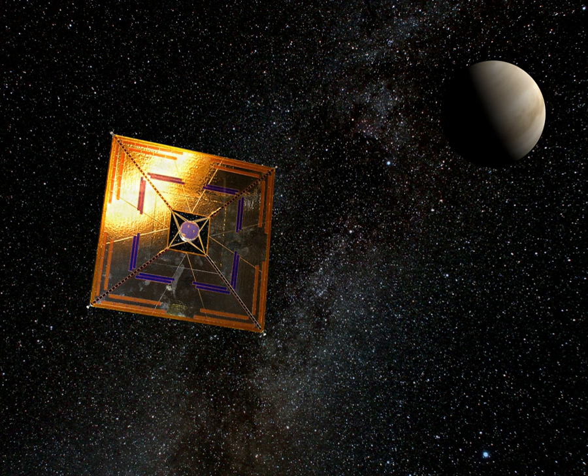Breakthrough Starshot. The well-funded Breakthrough Starshot project announced in April 12, 2016, aims to develop a fleet of 1,000 light sail nanocraft carrying miniature cameras, propelled by ground-based lasers and send them to Alpha Centauri at 20% the speed of light. The trip would take 20 years.